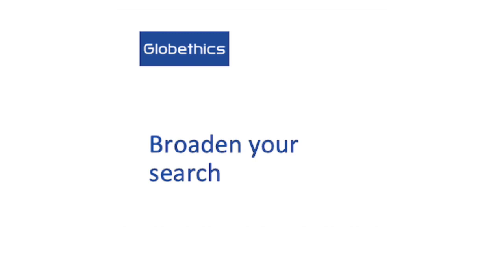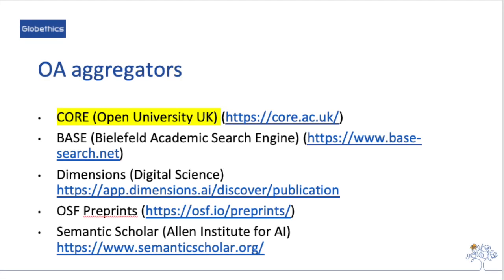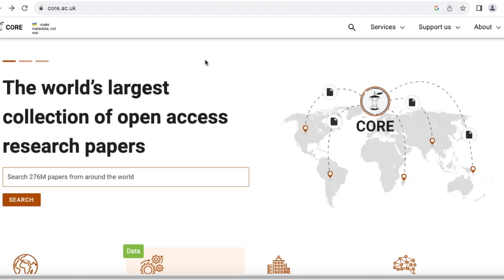Perhaps you may be curious about resources that cannot be found in our library. Here are some important open access databases you may want to use. Starting with open access aggregators: Core, Open University, BASE (Bielefeld Academic Search Engine), Dimensions by Digital Science, OSF Preprints, Semantic Scholar, and Allen Institute for Artificial Intelligence.